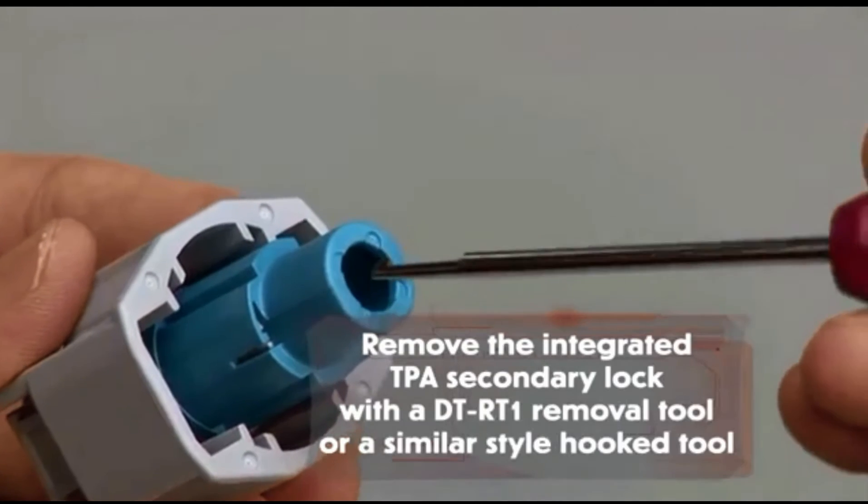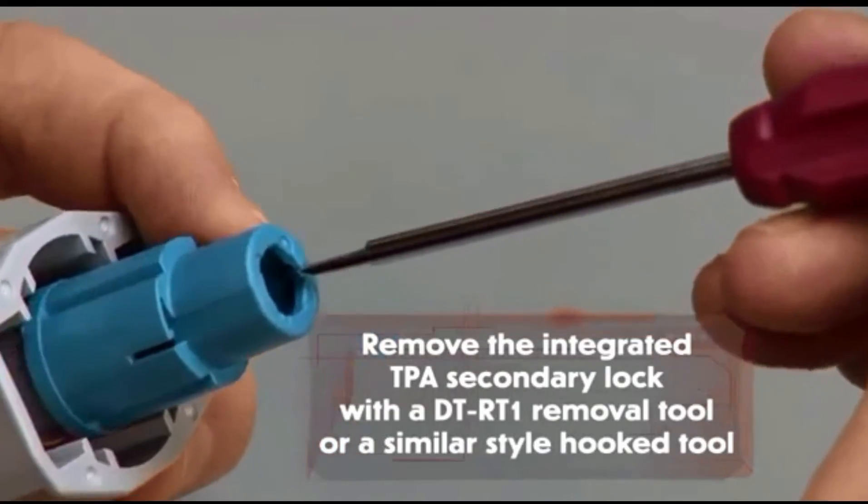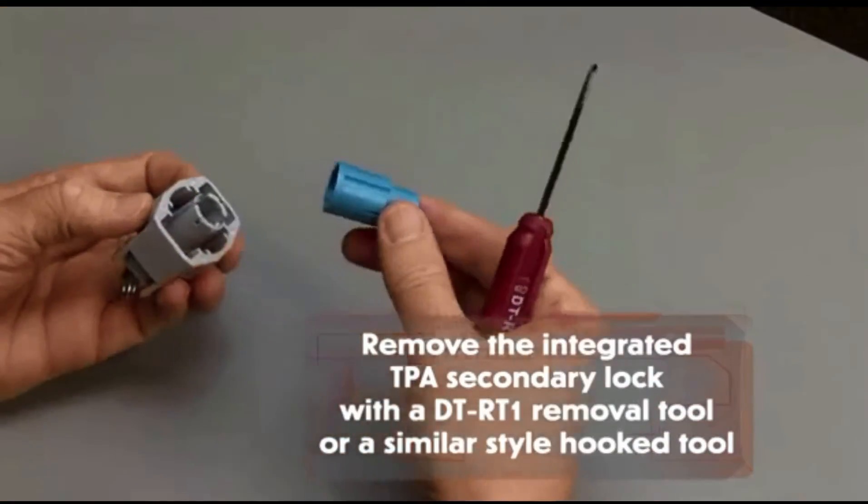Remove the integrated TPA secondary lock with the DT-RT1 removal tool or a similar style hooked tool.